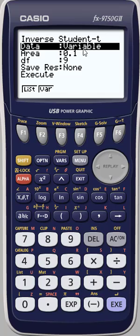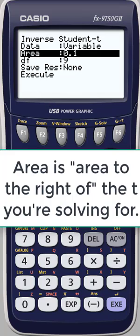Make sure that you have variable selected for data. If not, click F2 to get variable. The Casio calculator expects you to enter area which is to the right of the T value you're trying to find.